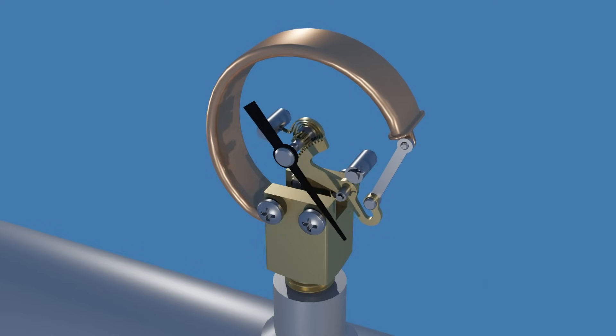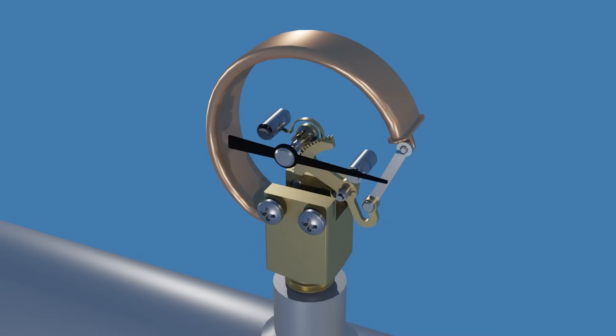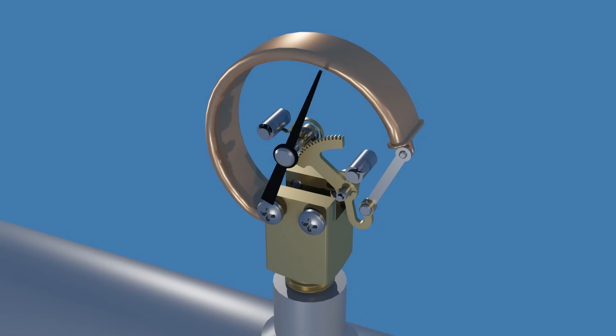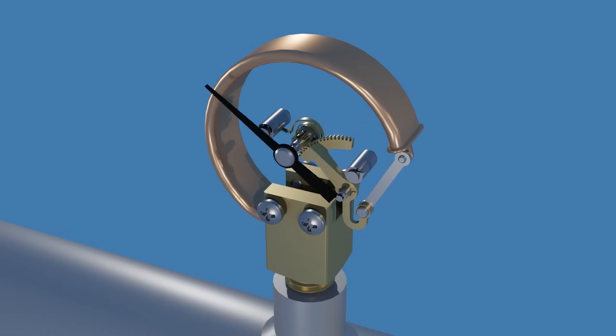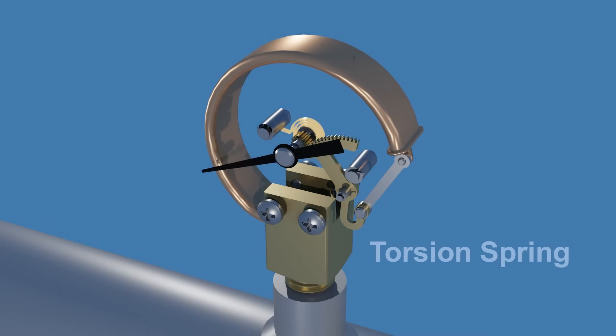When the pressure decreases, the Bourdon tube returns to its original shape, and the pointer goes back to its zero position on the dial with the help of the spiral torsion spring.